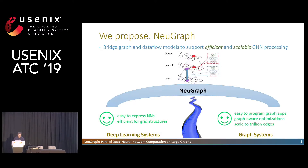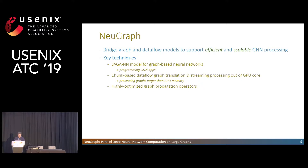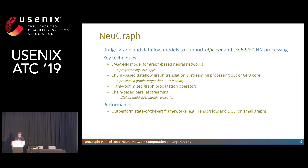We propose NewGraph, which bridges graph and dataflow models to learn from both and support efficient and scalable GNN processing. It contains a SAGA model for programming GNN applications, trunk-based dataflow graph translation and streaming processing out of GPU core to support large graphs. We also designed highly optimized graph operators for graph propagation and a chain-based parallel streaming strategy for efficient multi-GPU computation. With these techniques, NewGraph outperforms state-of-the-art implementations on small graphs fitting into GPU memory and scales to large graphs with multiple GPUs.